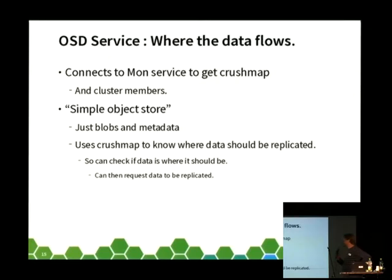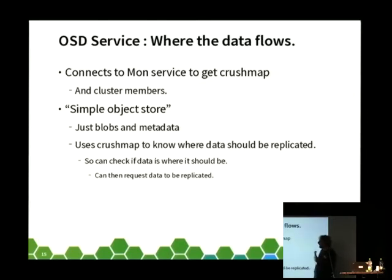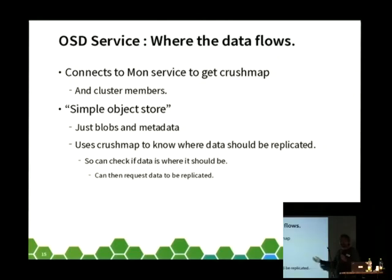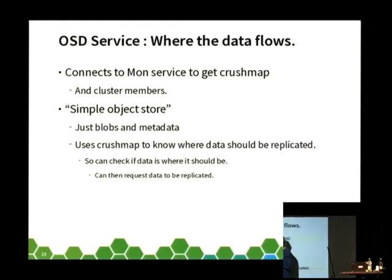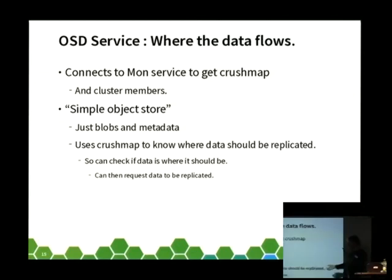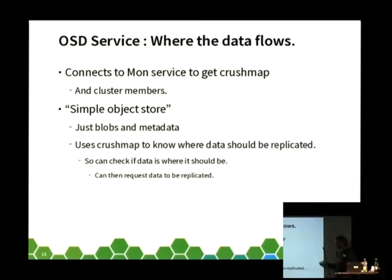The OSD service — the object storage daemon — is the data persistence layer. This is where all the data flows in and out of the Ceph cluster. It connects to the Mons service when it gets started, downloads the crush map, and then it can calculate where the data should be. This means that if data is missing, it can request the data, and if it's asked for data, it knows what data it has. It can then scrub that data and say, I've got an extra copy here, I should delete this. It basically stores a little bit of metadata around its blobs, and those blobs are a variable size but ideally quite small.